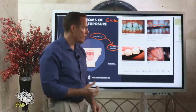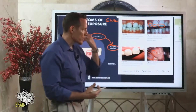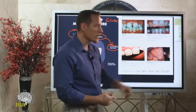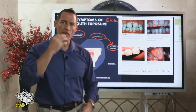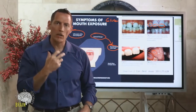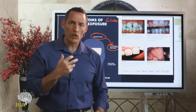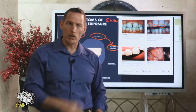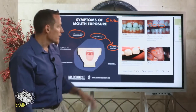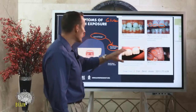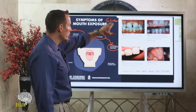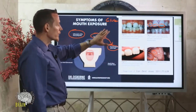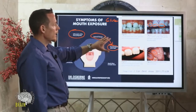If you've ever had fever blisters inside your mouth, those are also called aphthous ulcers. If you've ever had fever blisters around your mouth — canker sores on the lips or around the corners of the lips — these can all be manifestations of gluten exposure orally.